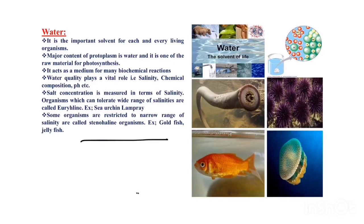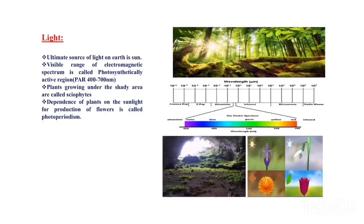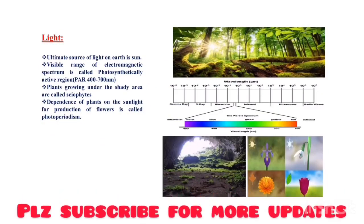The quality of water plays a very important role — factors like salinity, chemical composition, and pH matter. Salt concentration is usually measured in terms of salinity. Organisms that can tolerate wide ranges of salinity are called euryhaline organisms, and organisms restricted to one particular range of salinity are called stenohaline organisms.